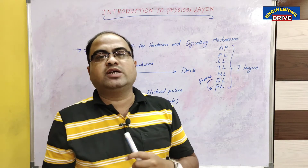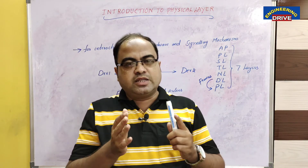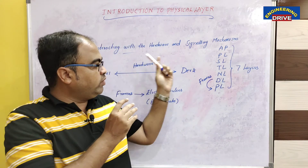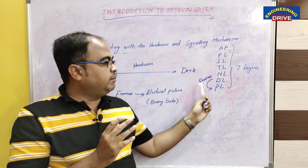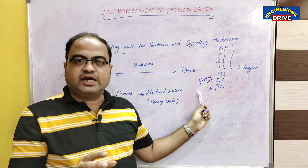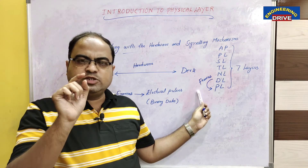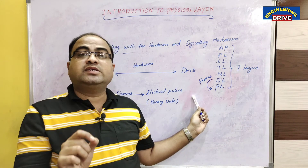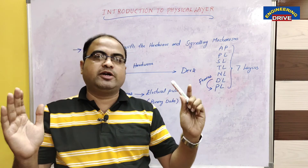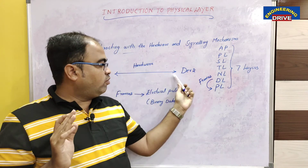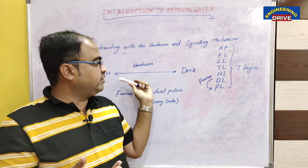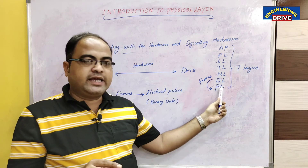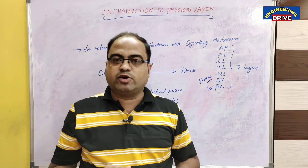Each and everything I am going to discuss in my next classes. The purpose of today's video is to give an awareness of the main purpose of the physical layer. Remember only one point: there is only one layer out of these seven layers in the OSI reference model which deals with the physical connectivity between the devices. What type of physical connection is used and how the data will be transferred — physical layer will take care of this work.